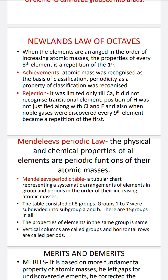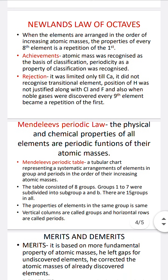However, the Law of Octaves was rejected because it worked only up to calcium, which has atomic number 20. It did not recognize transition elements — the elements present in the middle of the periodic table. The position of hydrogen was not justified alongside chlorine and fluorine. And when noble gases were discovered, every ninth element became a repetition of the first, so the law was automatically discarded.